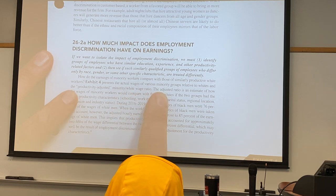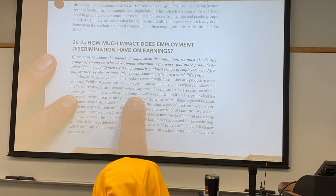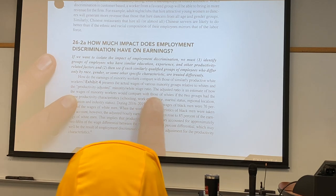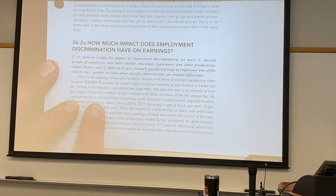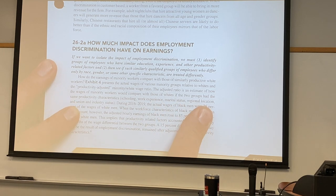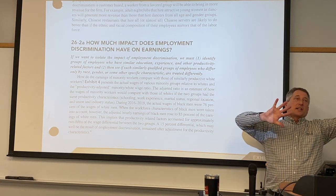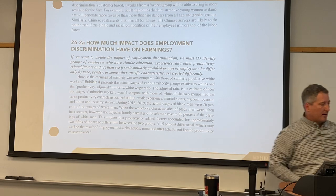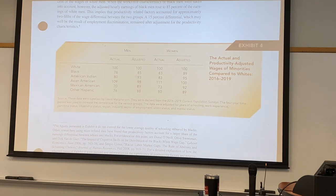Exhibit four presents the actual wages of various minority groups relative to whites and the productivity-adjusted minority/white wage ratio. The adjusted ratio is an estimate of how the wages of minority workers would compare between the two groups if they have the same productivity characteristics — schooling, work experience, marital status, regional location, union, and industry. Remember how I said we need to control for things using regression analysis.